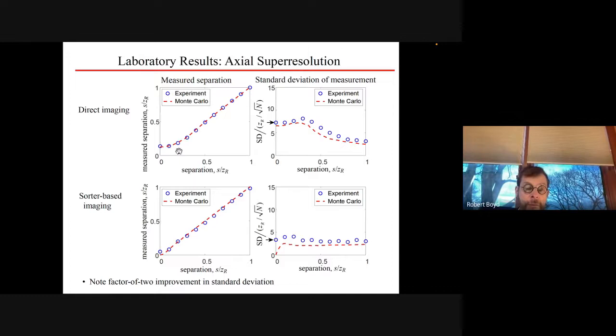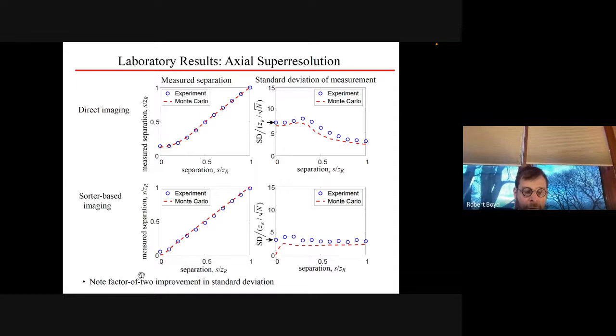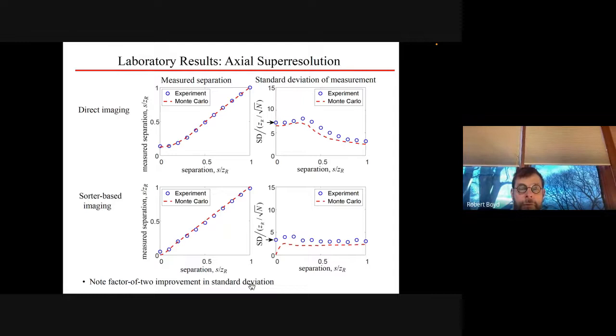Here are the results, direct imaging, sorter based imaging. The measured separation as a function of separation, they both perform pretty well that way, but then let's ask, what about the standard deviation of the measurement? Let's compare at the limit of zero separation. We find that the standard deviation, normalized standard deviation here is about six. But the standard deviation here is less than four. So there's about a factor of two improvement in the standard deviation through use of this modal decomposition of the object that we want to measure.